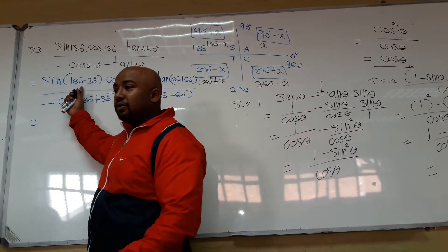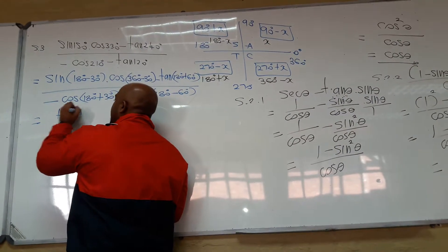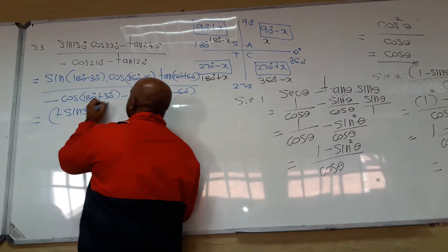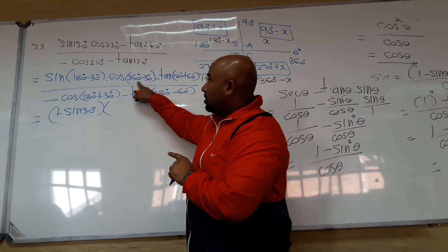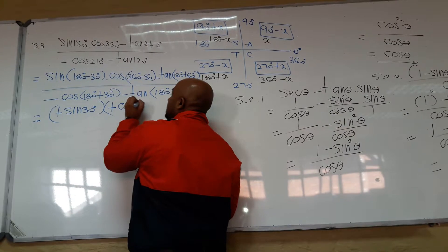Which quadrant? Second quadrant. Sine is positive. So, that is a positive sine, 30 degrees. Sine is positive. So, that is a positive. Cosine is positive. Cosine is 30 degrees.